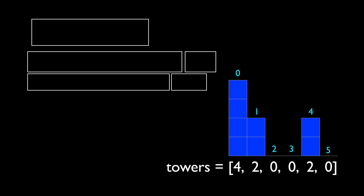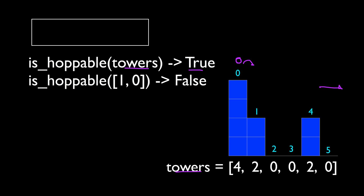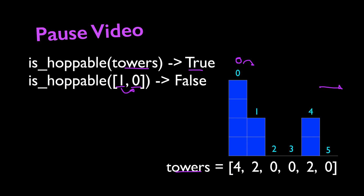To formalize this problem, we want to write a function called isHoppable, which takes the given array and returns true if it's possible to start at index 0, hop from one tower to another, and eventually get outside of the array. isHoppable of this towers should return true, but isHoppable of [1, 0] should return false, because the only choice is to start at index 0, hop to index 1, and from there we can't hop anywhere because the height is 0. If you want to practice, pause the video and try to solve it.